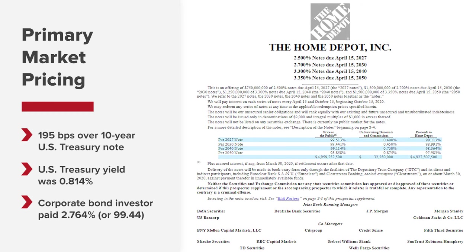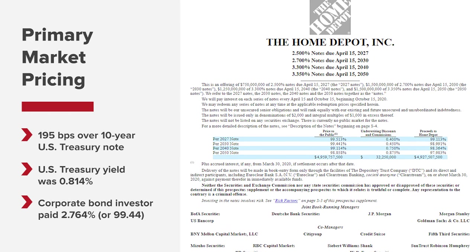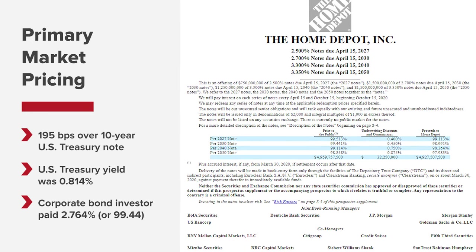The investor therefore paid 2.764% for the bond when it was initially issued, or in price terms, $99.44.